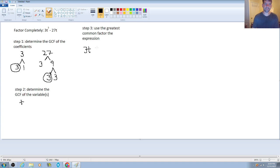factoring is like division. So it's the inverse or opposite operation of the distributive property. So if I took a 3t from 3t cubed, all that I have left is t squared. And then if I take out a 3t from 27t, I'm going to have 9 left over.